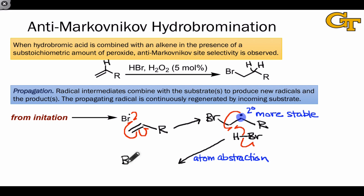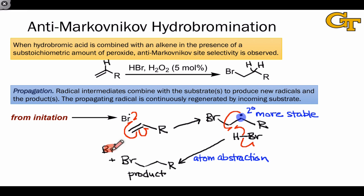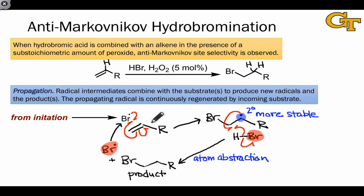This step does a couple of things. First and foremost, it generates the desired even-electron stable product — the alkyl halide. In addition, it generates a new bromine radical. Notice that the bromine radical generated in this second step of propagation came from one of the substrates, HBr. That's key to the idea of a chain mechanism. The chain is carried forward by a radical piece of one of the substrates — in this case, HBr. To carry forward the chain, this radical collides with another alkene molecule, converting more substrate to product.